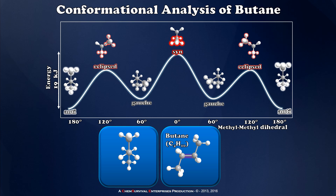So as you can see, it's all about the relative position of the larger groups in our Newman projection that tells us whether we're in anti, eclipsed, gauche, or syn conformations. A molecule like butane is an excellent example of this. I hope this was helpful to everybody. I'm Professor Davis from ChemSurvival.com and the YouTube channel ChemSurvival. I'll see you next time.